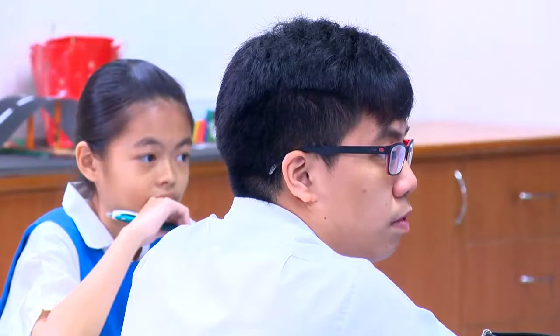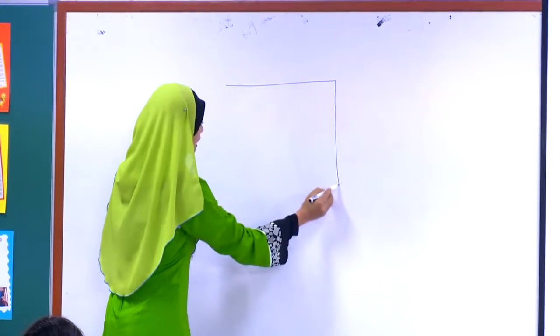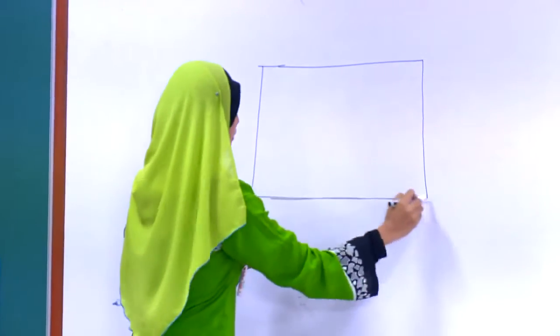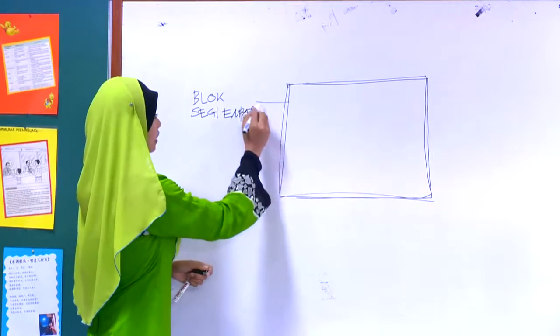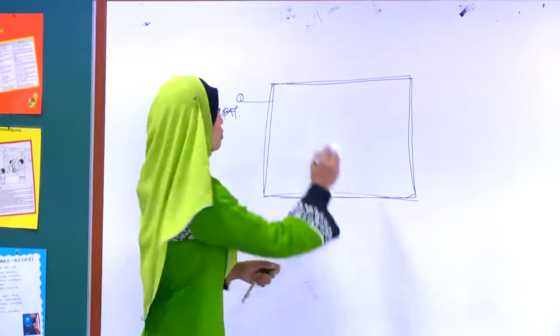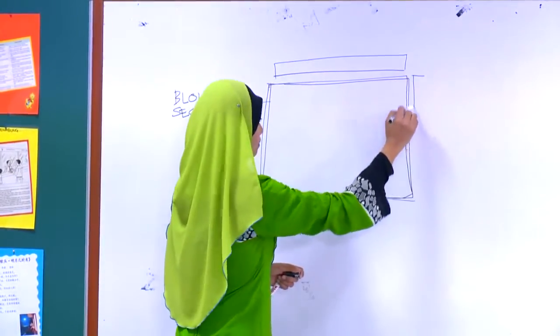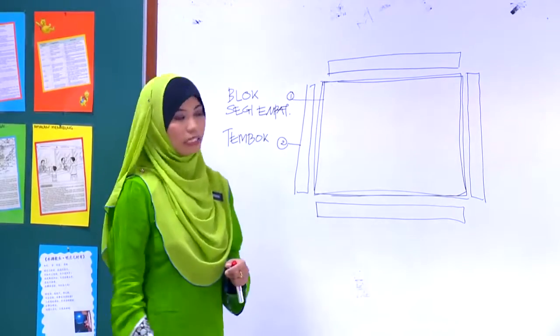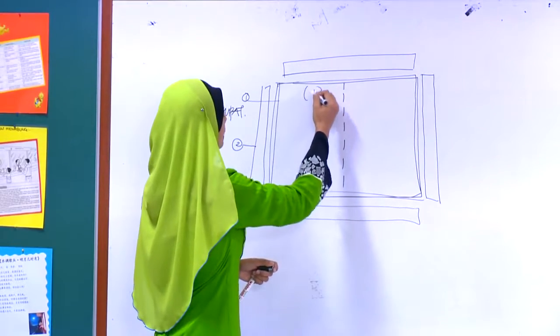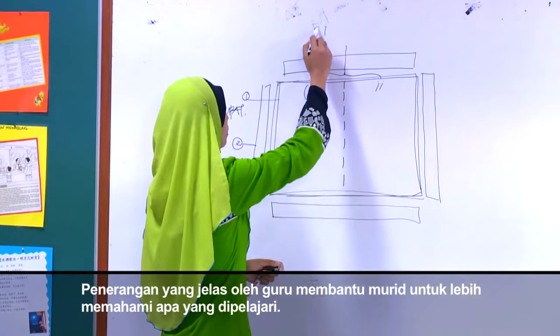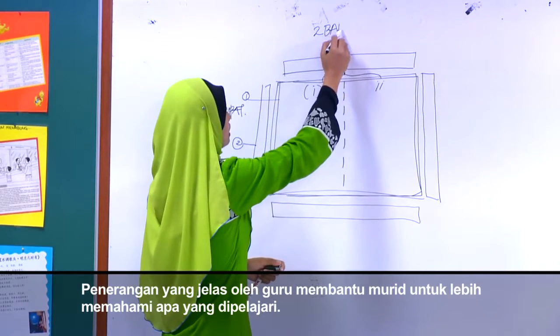Pertama, sekiranya kamu ingin melukis atau melakar ciri-ciri bandar Indus, perkara pertama kamu hanya perlu hasilkan satu bentuk segi empat. Melalui gambar ini, kamu sudah mendapat satu fakta iaitu terdiri daripada blok segi empat. Ciri kedua, kamu boleh lukiskan tembok di sekeliling bandar tersebut dan labelkan ia merujuk kepada tembok. Seterusnya, lukiskan garisan putus-putus dan bahagikan kepada dua bahagian, kerana apabila kamu menyatakan ini, kamu akan mendapat satu fakta iaitu bandarnya terdiri daripada dua bahagian.